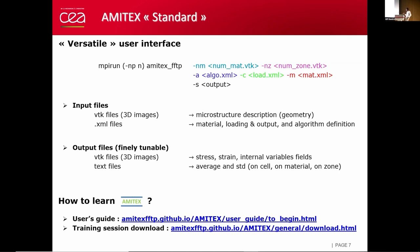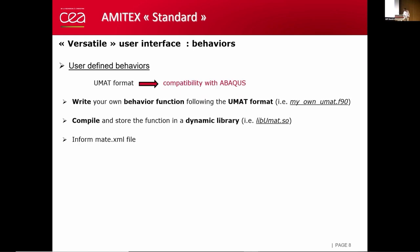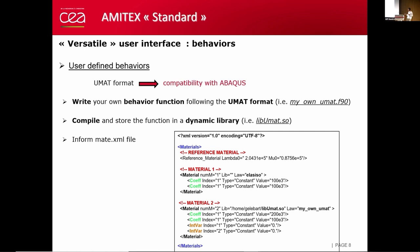There is a user's guide and training session available on the website. One specificity of the code is that you can write your own behavior function following the UMat format. If you are familiar with it, it's compatible with other codes. Once you have written your behavior function, you can compile it and store it in dynamic libraries. Then you can say in the XML file for material 2, this behavior will be my own behavior that you can find in the dynamic library that I have built here.